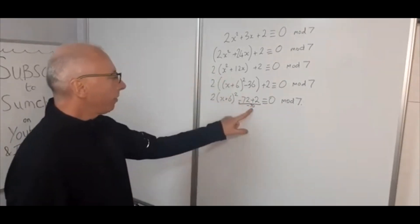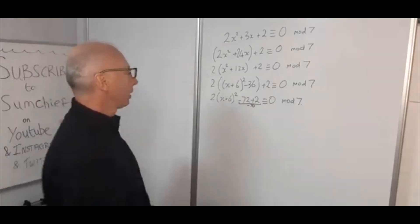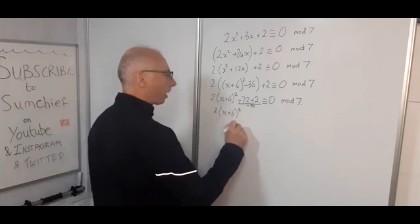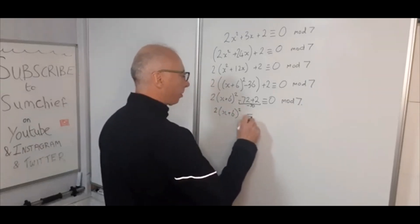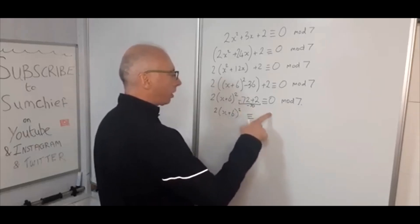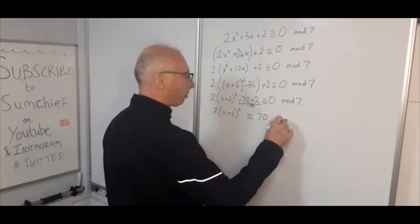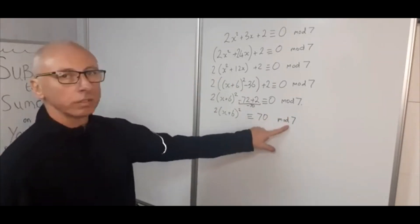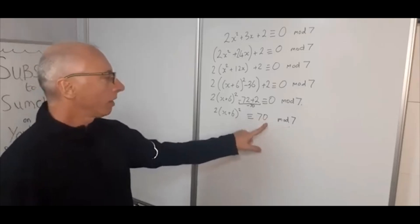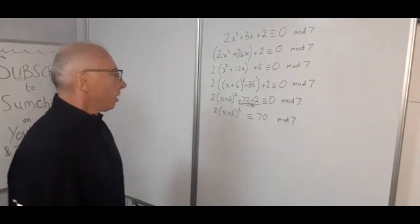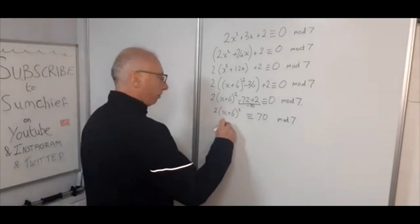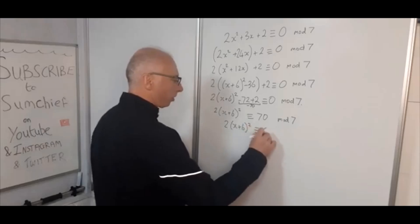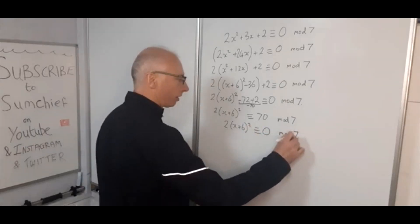So now the minus 70 we can now bring on to the other side. So now we've got 2(x + 6)² is congruent with, so we've got minus 70, bring it to this side, we've now got 70 mod 7. And that's falling into our hands quite nicely because 70 mod 7, we know that that is the same as 0. So let's just do that in there, so we see what we're doing. 2(x + 6)² is congruent with 0 mod 7.